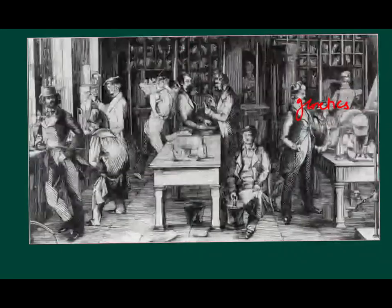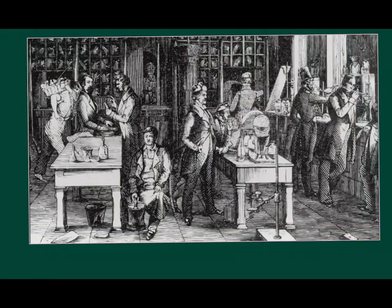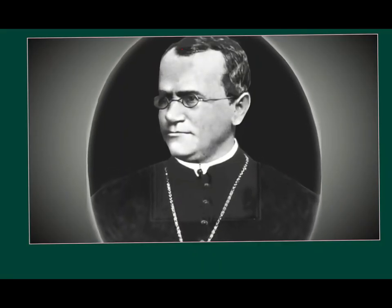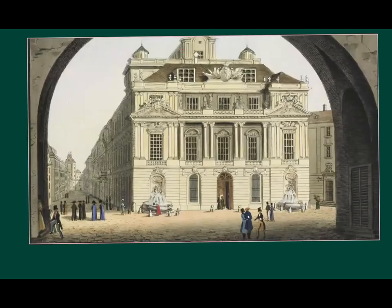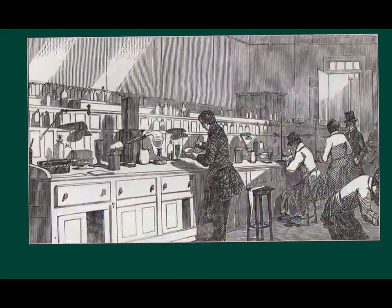The monastery sent him to the university in Vienna and that gave him the education in science, math, chemistry and botany that he then brought back to use in his teaching. Mendel accepted a teaching position at the monastery in Brno after completing his university studies. It was during this period he began his famous pea plant experiments.